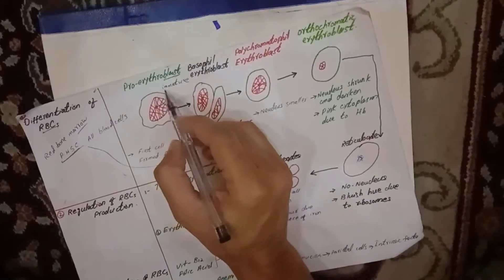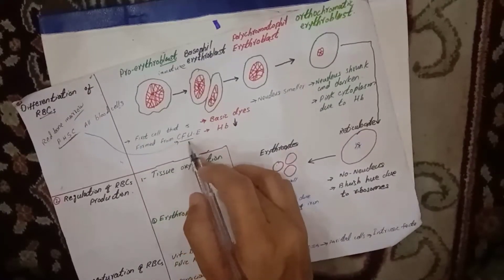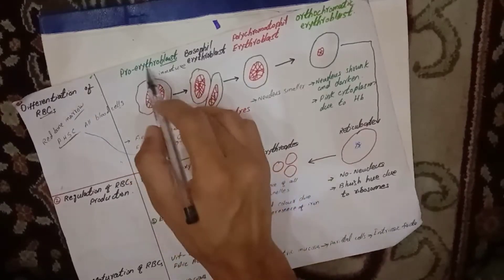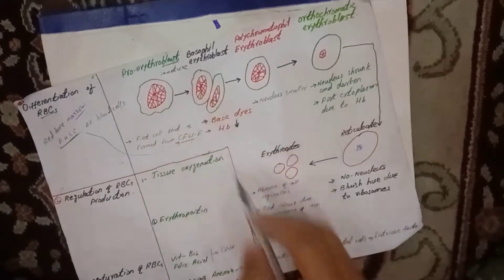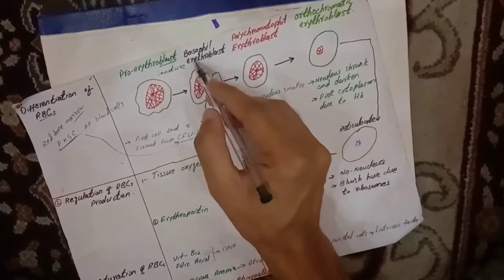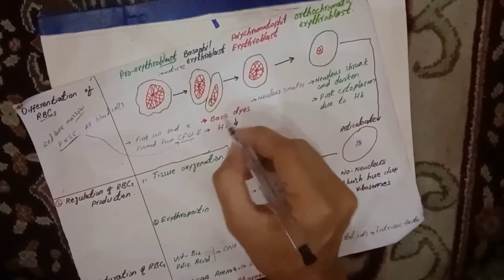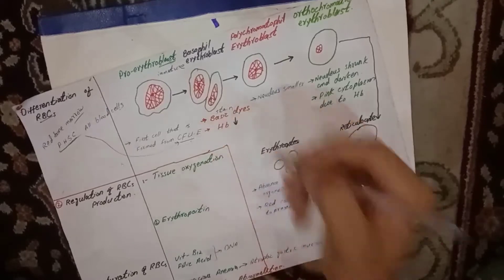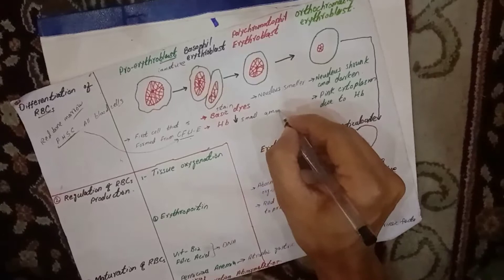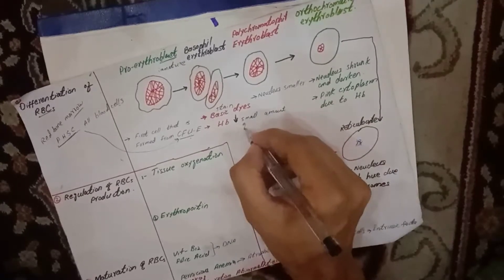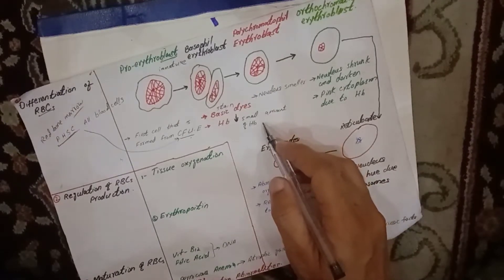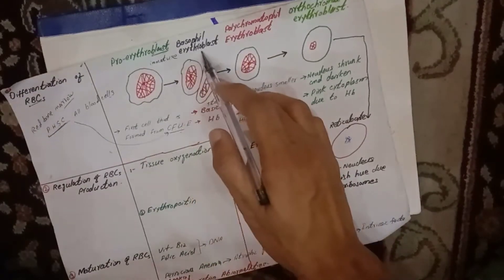The pro-erythroblast is the first cell formed from the committed stem cell, the colony forming unit erythrocyte. This pro-erythroblast then differentiates into the basophil erythroblast. We call this cell basophil because it stains with basic dyes, and a small amount of hemoglobin starts to accumulate in it.